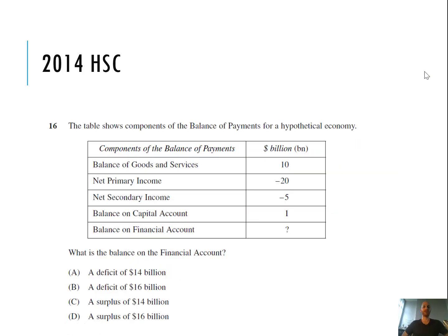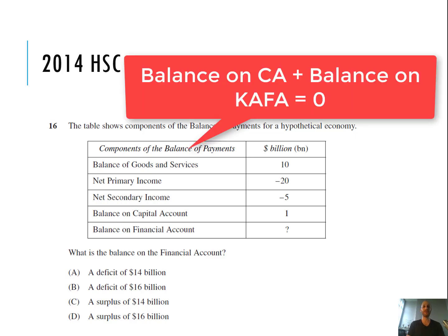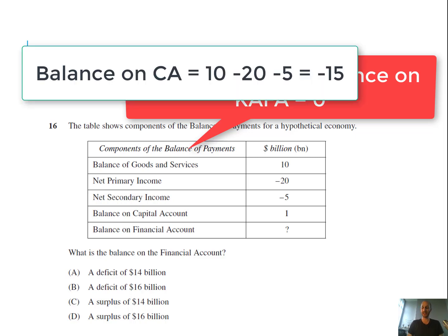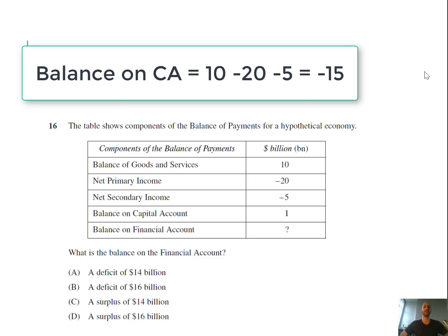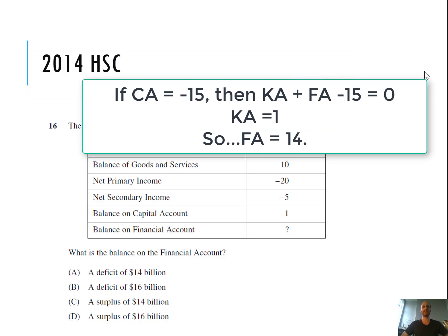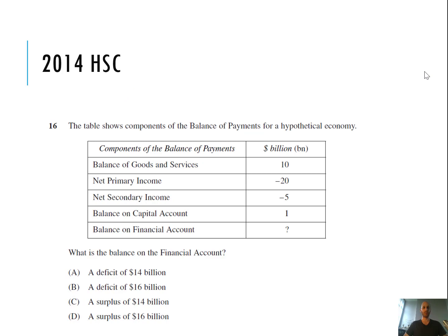Question 16 shows the balance of payments for a hypothetical economy — what is the balance on the financial account? The key thing to know is that the balance on the current account plus the balance on the CAFA will equal zero. The current account balance here is 10 minus 20 minus 5, which gives us negative 15. So the capital and financial account must equal positive 15. If the capital account is 1, the financial account needs to be a surplus of 14 billion. Pause the video and calculate it yourself if needed.